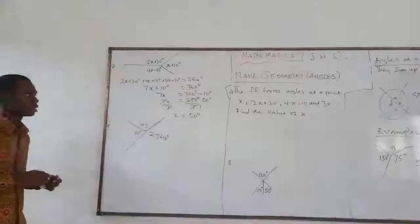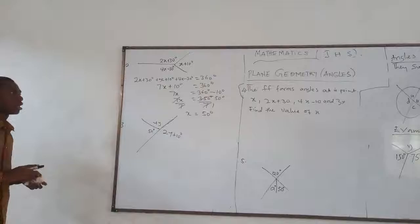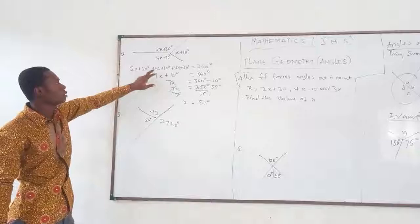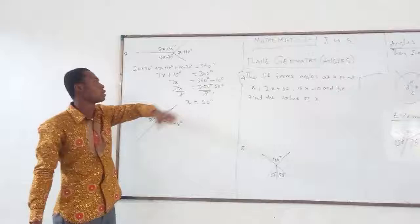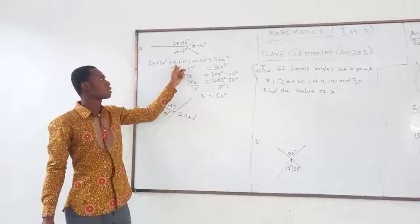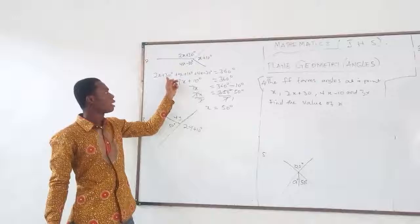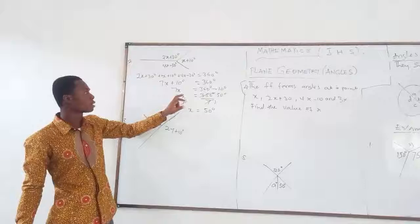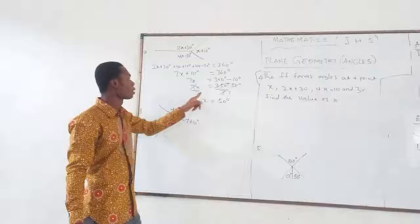I repeat: sum of angles 2X plus 30, X plus 10, 4X minus 30 equals 360 degrees. All the variables give 7X. The constants: 30 plus 10 minus 30 gives 10 degrees. So 7X plus 10 equals 360. Grouping like terms, 7X equals 360 minus 10, divided by the coefficient of X. Our X is therefore equal to 50 degrees.